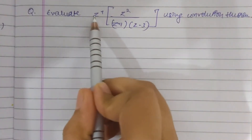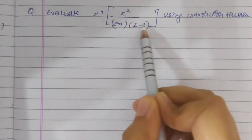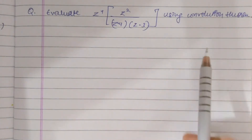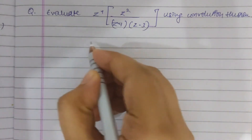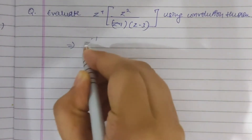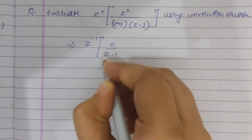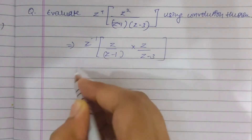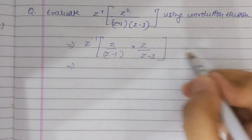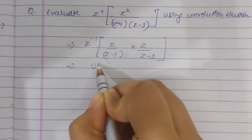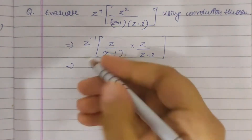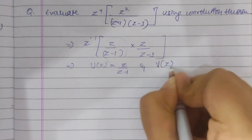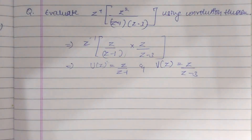So let us take a problem: evaluate Z⁻¹[z²/((z−1)(z−3))] using the convolution method. First we can write this expression in the form Z⁻¹[z/(z−1) · z/(z−3)]. So our U(z) is equal to z/(z−1) and our V(z) is equal to z/(z−3).